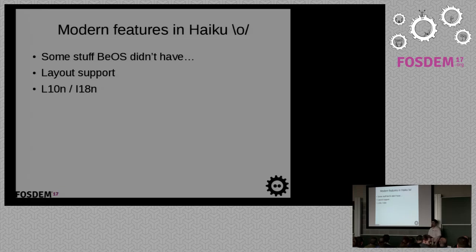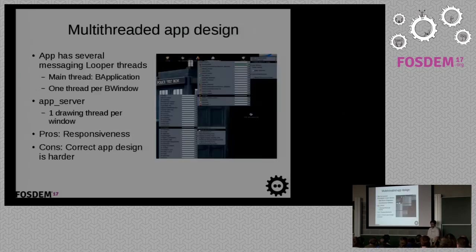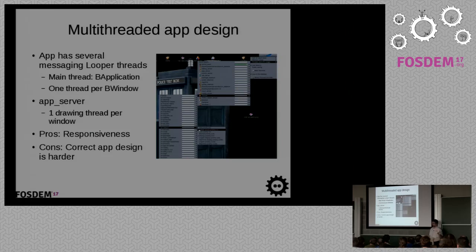Of course, we've added new stuff in Haiku that wasn't really current at BeOS time, like layout support, which was necessary for translation because some strings are not the same width in different languages. It works quite well now. The design of our graphics server and Interface Kit — which is our own toolkit — is a bit unusual because we use threads everywhere.